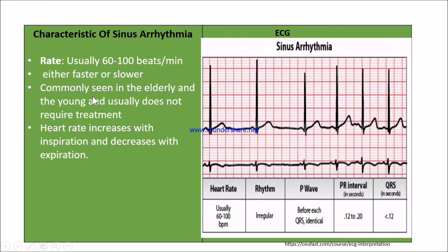In sinus arrhythmia, the heart rate will be 60 to 100 beats per minute — that means it's normal. It is commonly seen in elderly and young people, and we do not require any treatment. We can see on the ECG that the heart rate is 60 to 100 beats per minute — calculating 300, 150, 75, 60 — confirming 60 to 100 beats per minute.